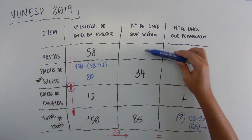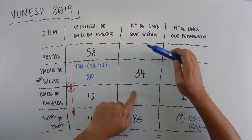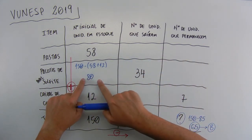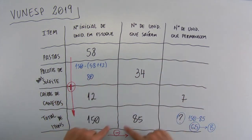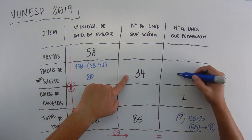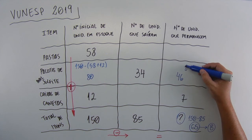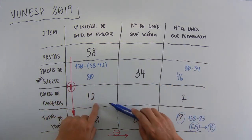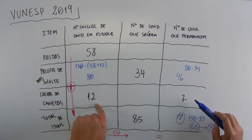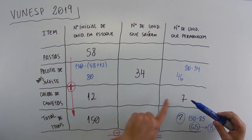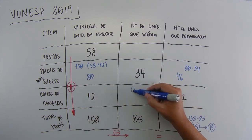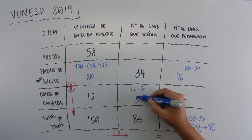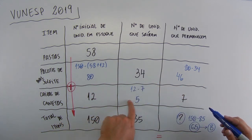Now here, we can't do this column yet, because this data and this are missing. So, we can do here, 80 minus, look here, 80 minus 34 will give 46. I'll indicate the calculation. Now, we can do this one. So, it's 12 that takes out how much that remains 7? So, we just do 12 minus 7. Here, 12 minus 7, which will give 5. So, 12 takes out 5, remains 7.